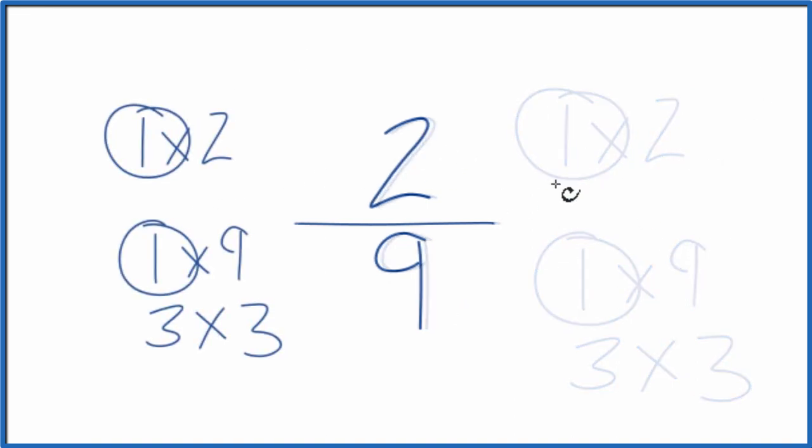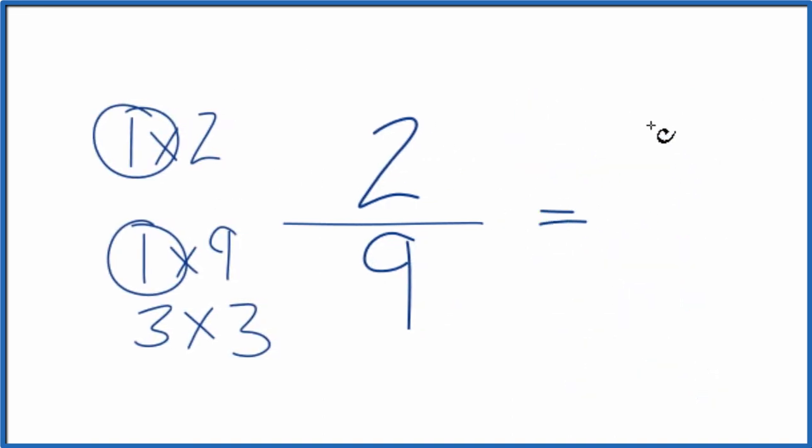Let's move this over here. So two times one, that equals two. Nine times one, that equals nine. And we're right back where we started.